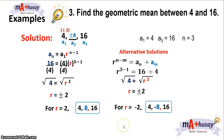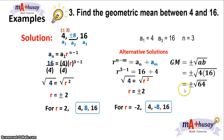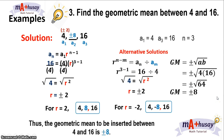An alternative solution for finding the geometric mean between two non-consecutive terms: since we are only inserting one mean, we can multiply 4 times 16 and get the square root of the result. 4 times 16 is 64, and the square root of 64 is positive or negative 8. This shortcut works when inserting only one geometric mean. Thus, the geometric mean between 4 and 16 is positive or negative 8.